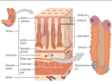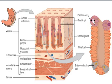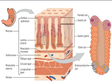The stomach has many secretory cells. Mucus cells secrete mucus. Regenerative stem cells produce new cells. Parietal cells secrete hydrochloric acid. Chief cells secrete gastric lipase, pancreatic lipase, and trypsinogen. Enteroendocrine cells, concentrated especially in the lower end of the gland, secrete hormones.